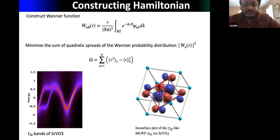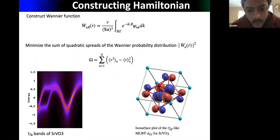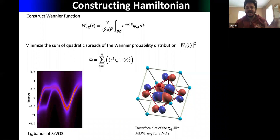To pass DFT information to the DMFT code, from the DFT Bloch states ψ we construct localized bases — specifically Wannier functions — out of these Bloch states. We minimize the spreading of the Wannier functions as much as possible, which is why this scheme is called Maximally Localized Wannier Functions (MLWF).